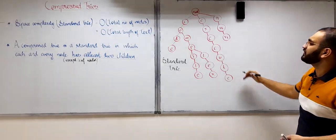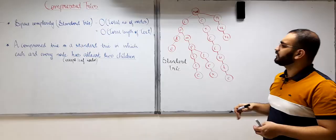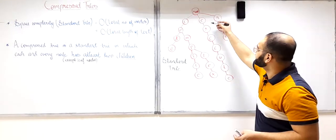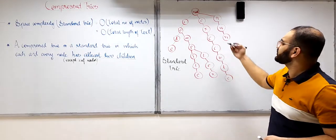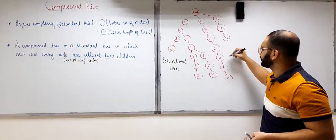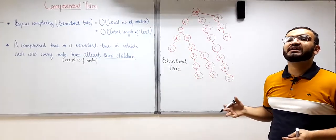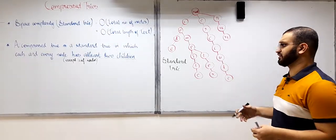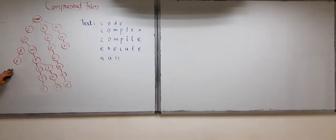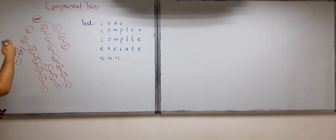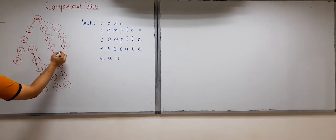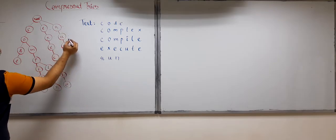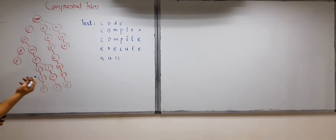In a standard try you can find many nodes which have just one child, so this is not a compressed try. Here I have drawn a standard try — this is not a compressed try because many internal nodes have only one child, for example nodes R, U, E, X, E — all of these are having just one child.